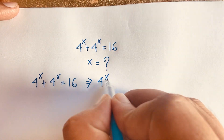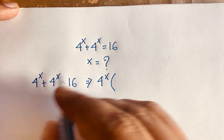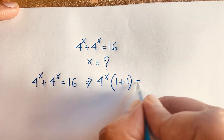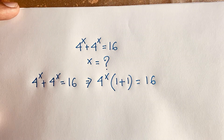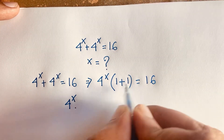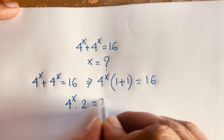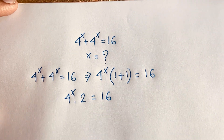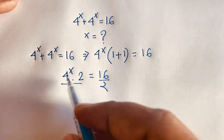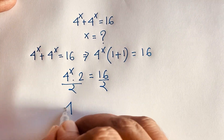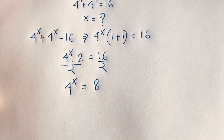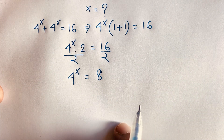You can see easily that 4 to the power x is common. Factoring it out: 4 to the power x times (1 plus 1), which equals 2, is equal to 16. If you divide both sides by 2, the 2 cancels and we find 4 to the power x is equal to 16 divided by 2, which is 8.